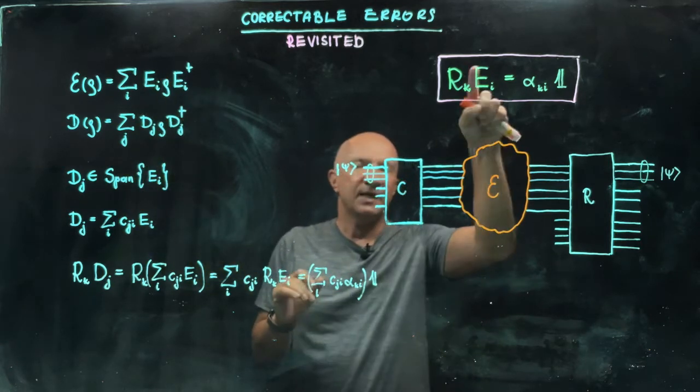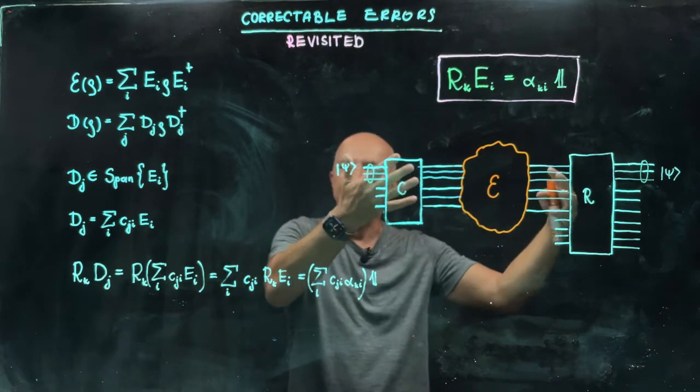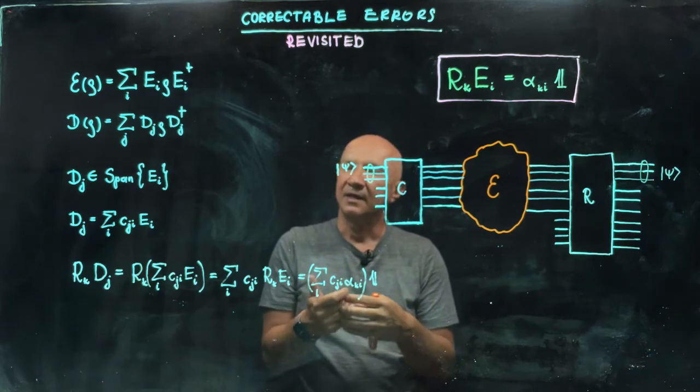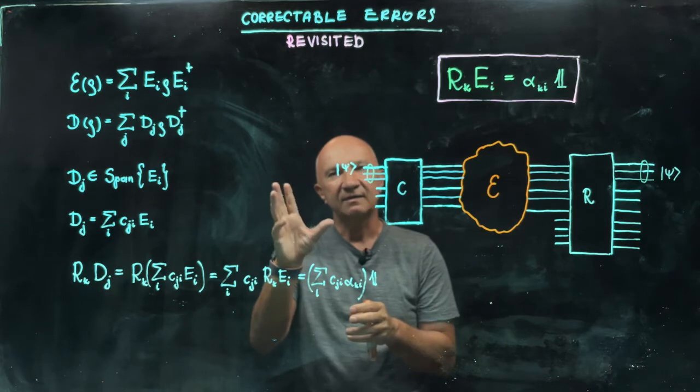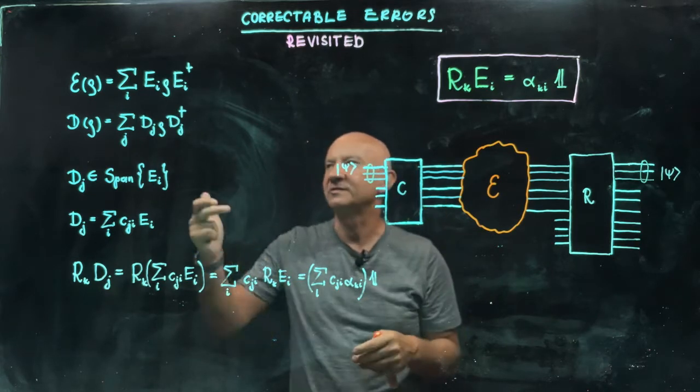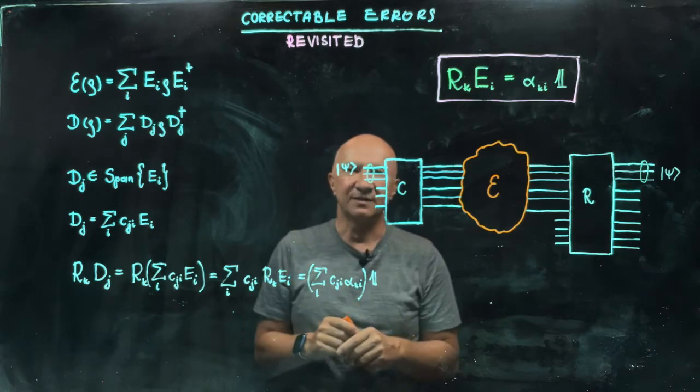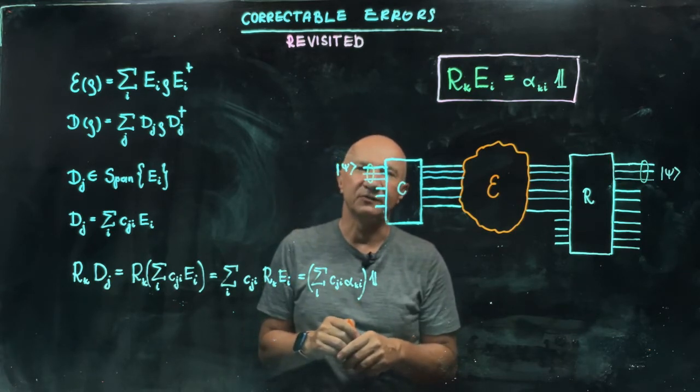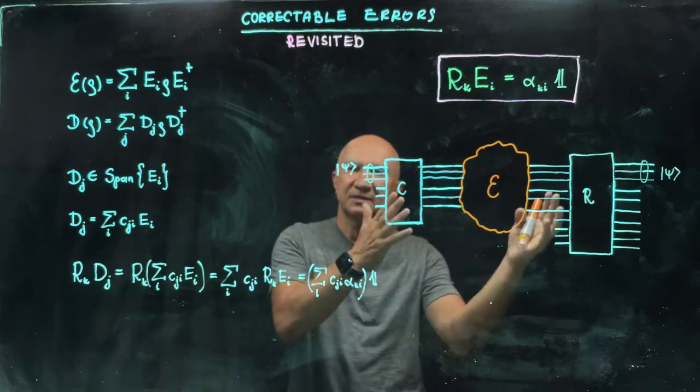So you look at the set of errors that the circuit can correct, and then you take a linear span of those errors. So any new error, call it DJ, so any map with those errors can be also corrected or inverted by the same circuit.